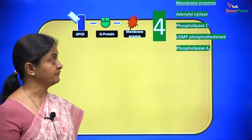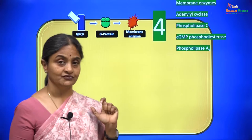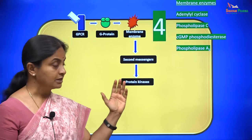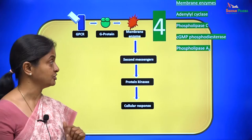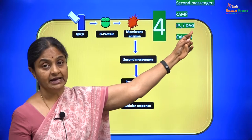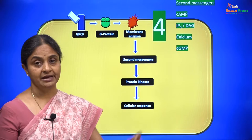The four membrane enzymes we will consider are adenylyl cyclase, phospholipase C, cGMP-phosphodiesterase, and phospholipase A2. The membrane enzyme activates second messengers, which then activate serine-threonine kinases within the cell to bring about the cellular response. The four second messengers are cyclic AMP, the inositol triphosphate–diacylglycerol combination, calcium, and cyclic GMP.